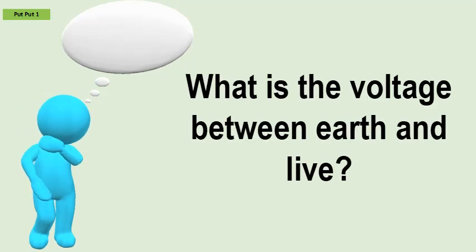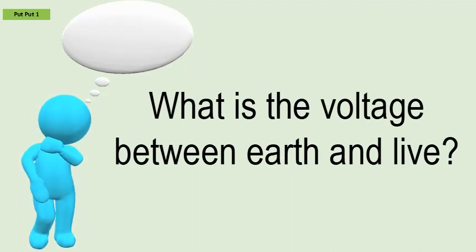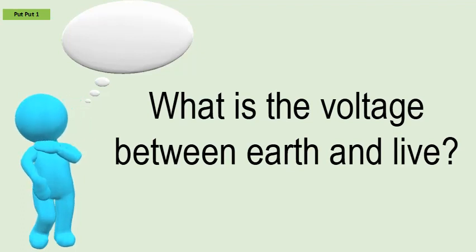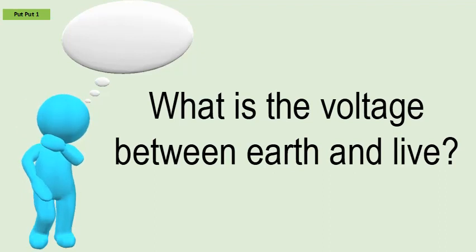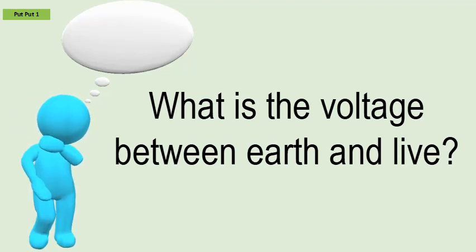What is the voltage between Earth and Live? Ideally, neutral is at 0V and Earth is at Earth potential, which is also more or less 0V. Thus, the potential difference between Live and Earth will be approximately 240V, and that between neutral and Earth will be 0V — they will be equipotential.